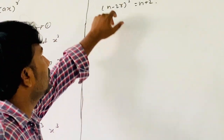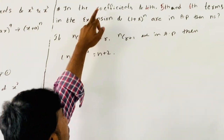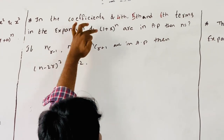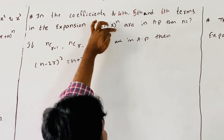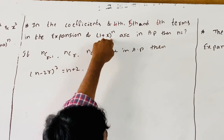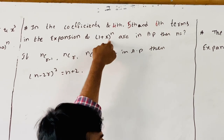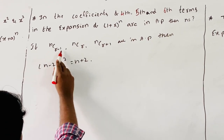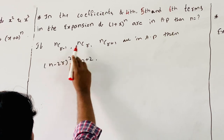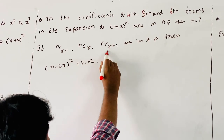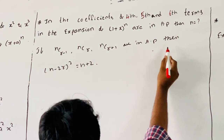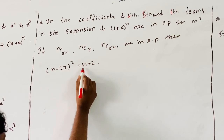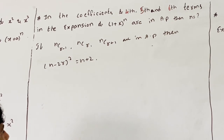Next problem: if the coefficients of the 4th, 5th, and 6th terms in the expansion of (1+x)^n are in AP, find the value of n. You know that if nC(r-1), nCr, nC(r+1) are in AP, then the formula is: (n - 2r)² = n + 2.